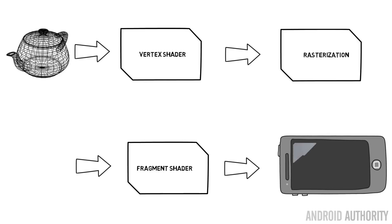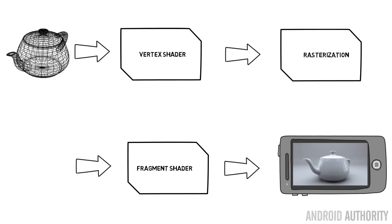A vertex shader was programmable — the game designer could write some code that would handle each of those vertex operations. A vertex shader runs once per vertex on a 3D model.